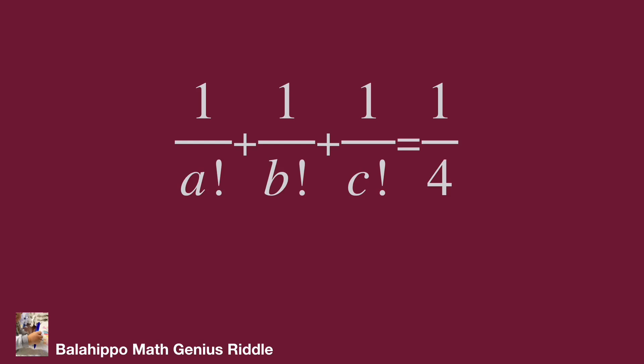The given information: 1 over A factorial plus 1 over B factorial plus 1 over C factorial equals 1 over 4. There are A factorial, B factorial, and C factorial in it. Before finding the result, let's quickly explain what a factorial is.